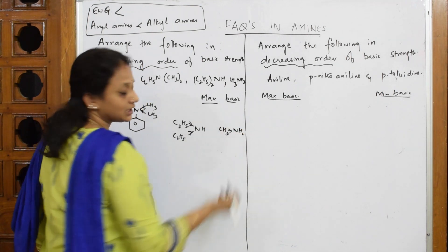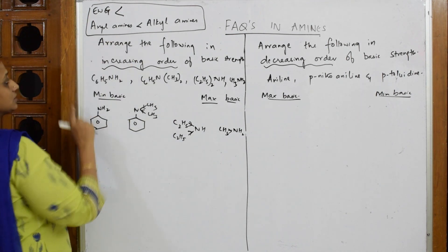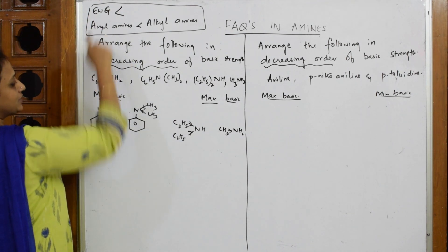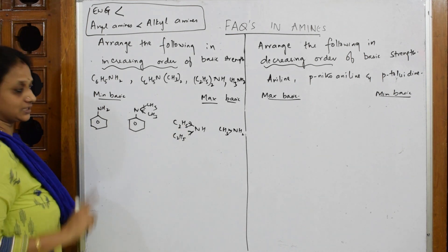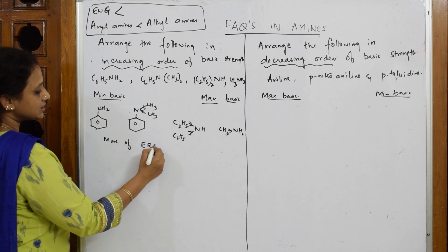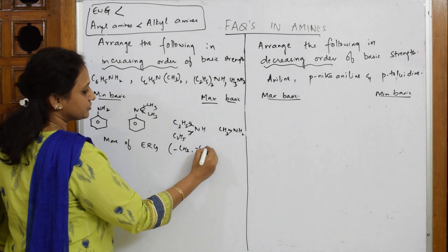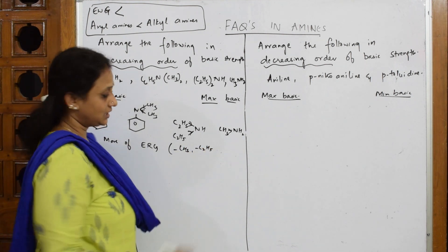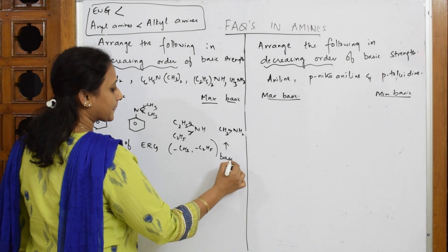One methyl group donating, yes done. Now what did I say? This is your order. First, are we finding any EWG groups here? No, all are electron releasing. Important thing: more electron releasing groups like CH3, C2H5, OCH3 - the greater is the basicity.